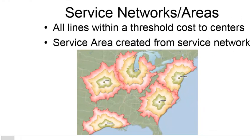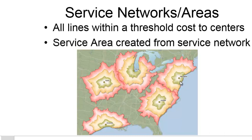Another network analysis problem is termed the service network or service areas — all the lines within a certain threshold cost to some resource center. For example, here we have Philadelphia and Chicago. The area in green might be all the roads within an hour's drive of Philadelphia, and here are all the roads within an hour's drive of Chicago. From all these roads, we can generate polygons. This is a service area representing the area within an hour's drive of Chicago, while the green polygon is a service area for Philadelphia. So the service network is our lines, and service areas are created from our service network.